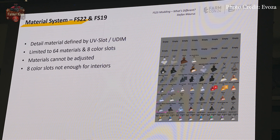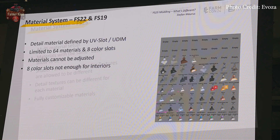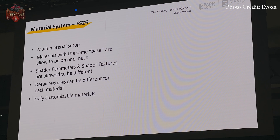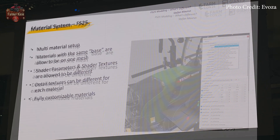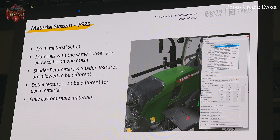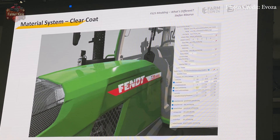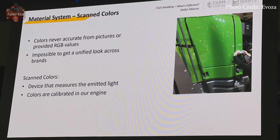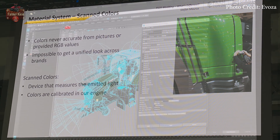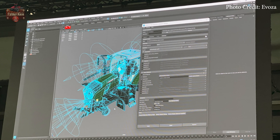The current material system, first introduced in FS19, still had some limits. For FS25 the system is changing to allow better use of multiple materials. There is a multi-material setup where materials with the same base are allowed to be on the same mesh, shader parameters and shader textures can be different, detail textures can differ for each material, and each is fully customizable. A clear coat is being added to vehicle paint, and color accuracy is improved by scanning real vehicles and implements and calibrating within the game engine to properly render in-game.